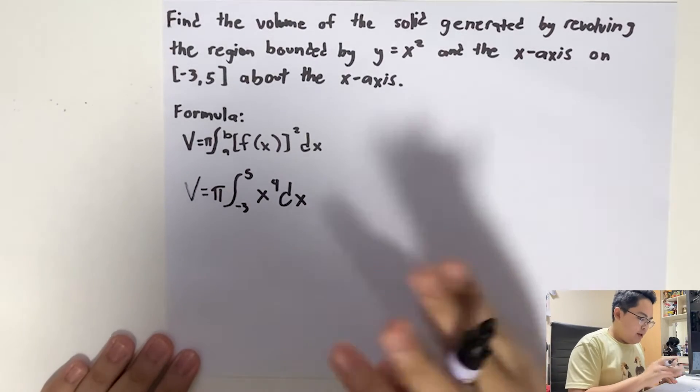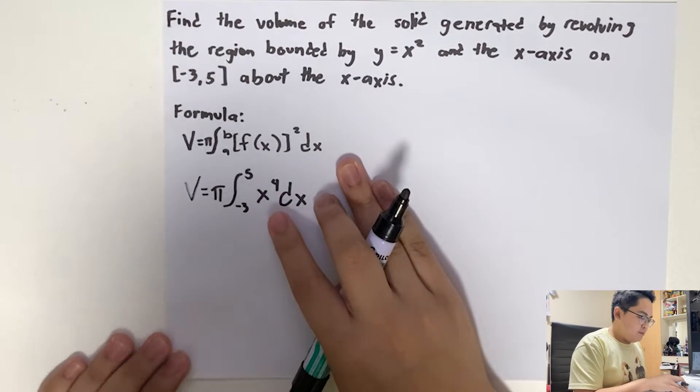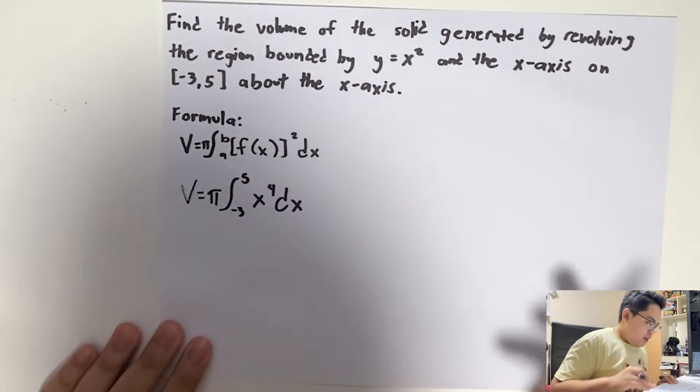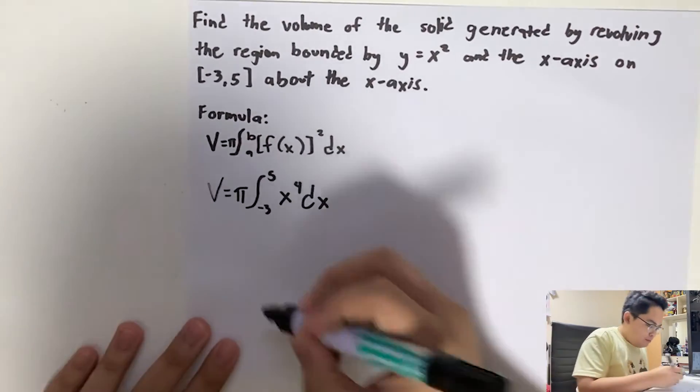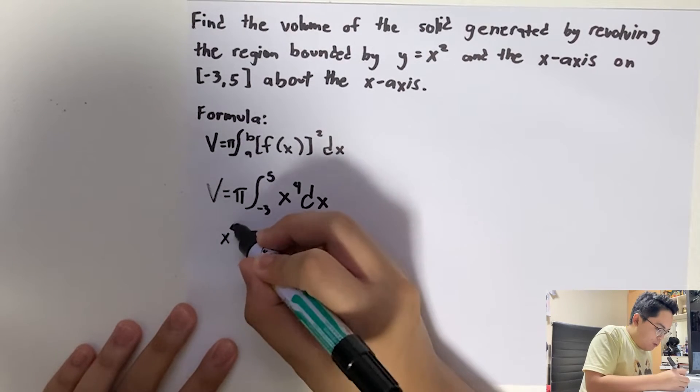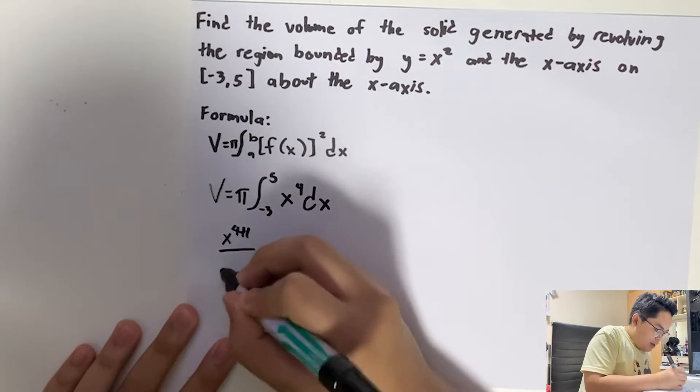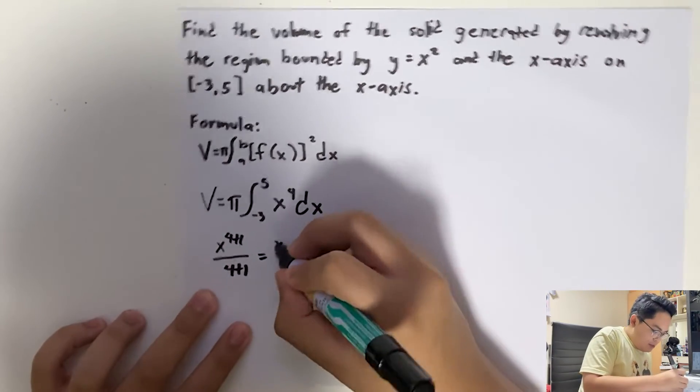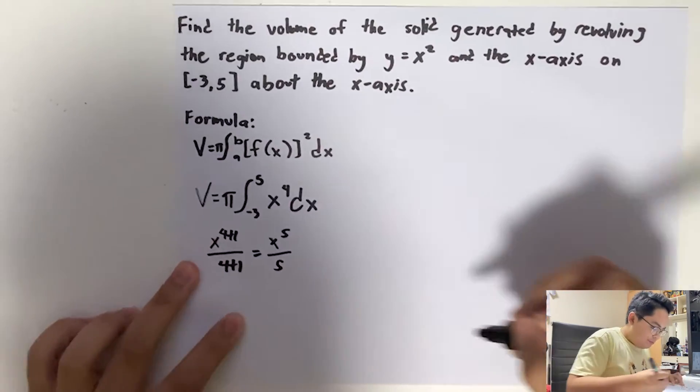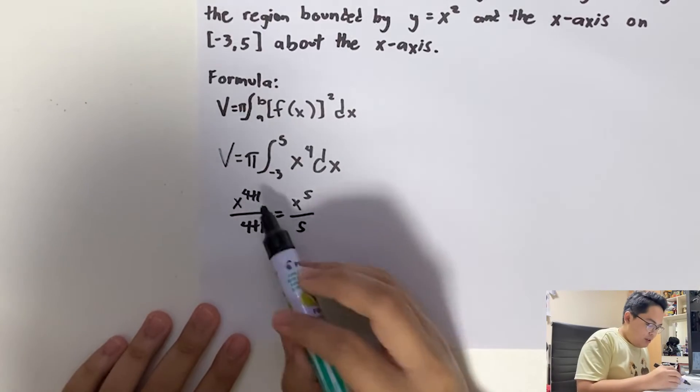So let's go ahead and integrate this problem. x⁴ is just a simple integration of a power. So we go ahead and add 1 to the exponent on top and do that also on the denominator. So therefore, that becomes x⁵/5. So we're done integrating.